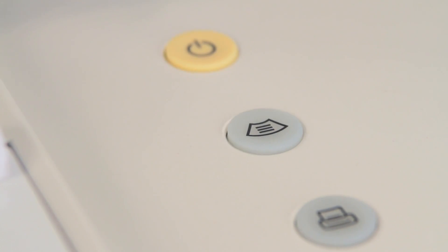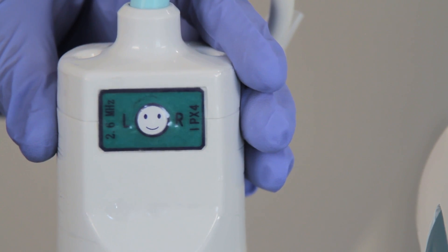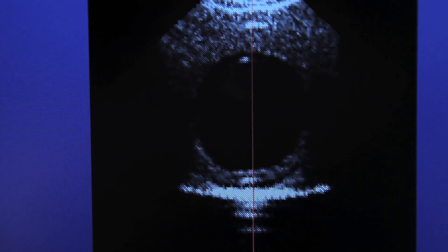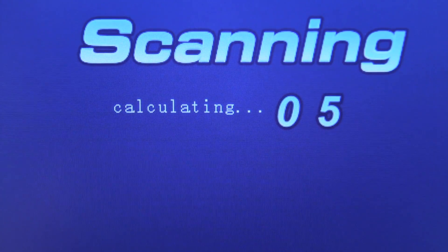press the scan key on the control panel or the smiling face button on the probe to scan the bladder. Do not disturb the device during scanning. The scan time could take up to 10 seconds for a 12-image scan and up to 20 seconds for 24 images.